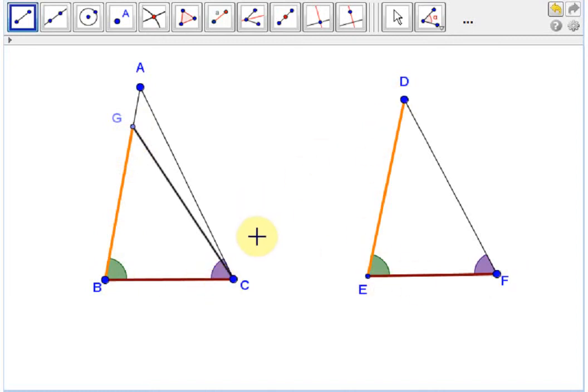And now we'll mark a pair of congruent angles: GCB and DFE. So now we have this angle GCB. Notice that it's smaller than angle ACB.